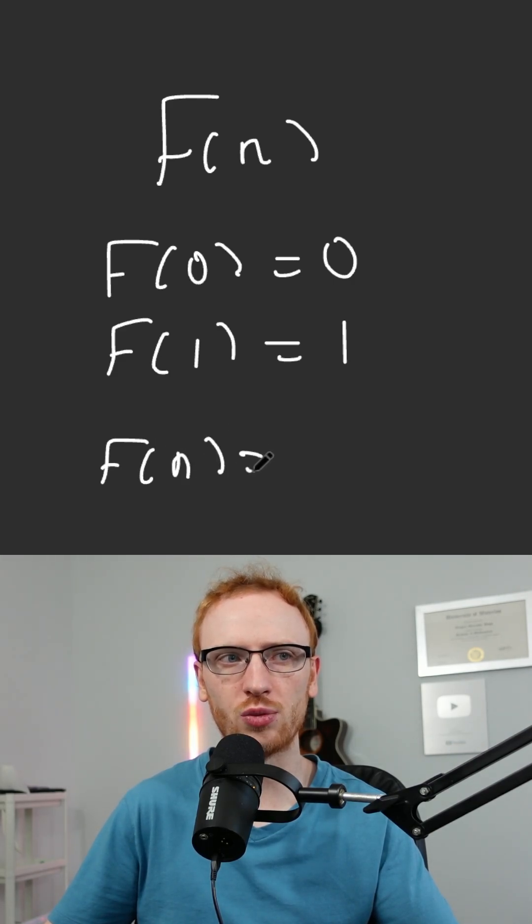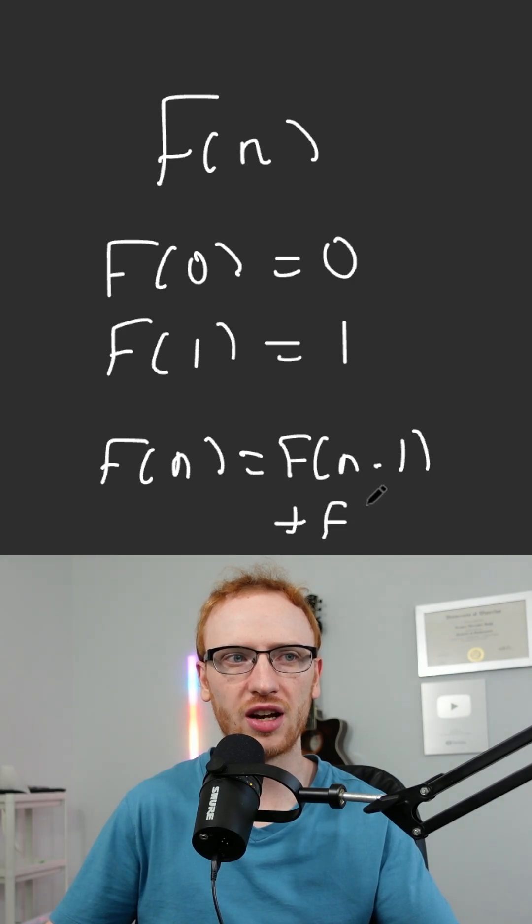But more generally, for any n greater than 1, we have that F at n is F at n minus 1 plus F at n minus 2. It's the sum of the previous two values.